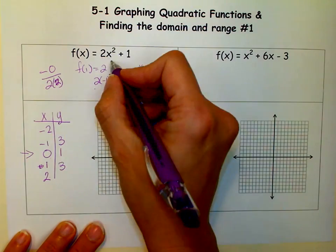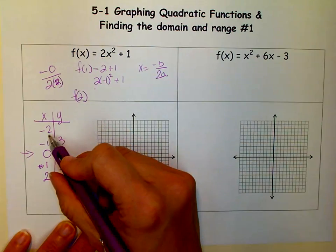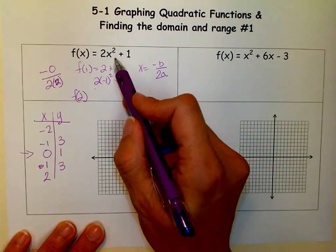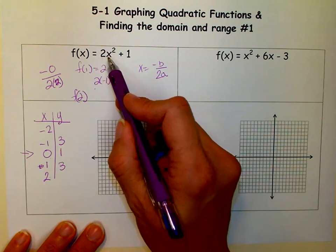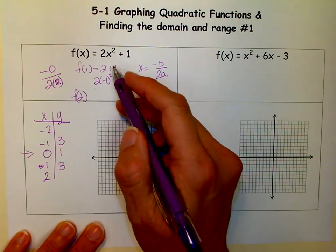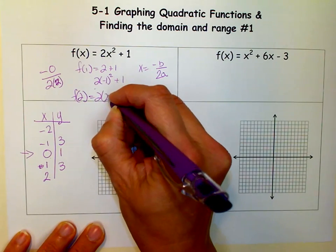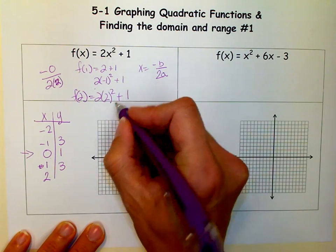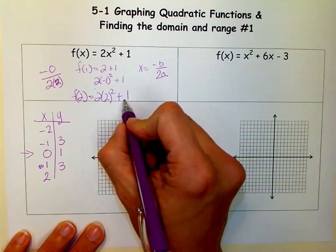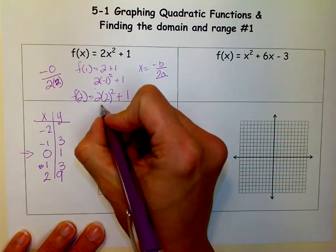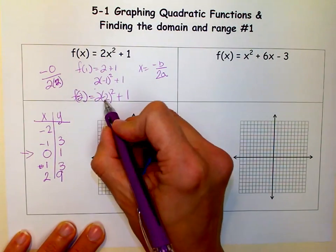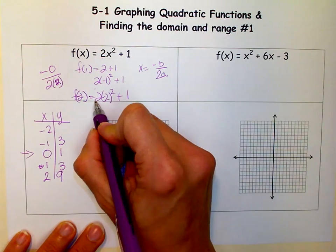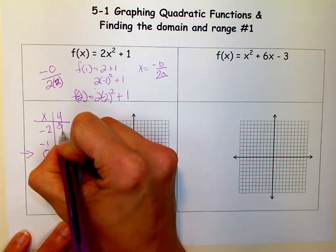So if I put a 2 in, f of 2, which is going to be the same as f of negative 2, because there's no x part here. So, 2-squared is 4, and 4 times 2 is 8, and 8 plus 1 is 9. And if I put a negative 2 in there, I get the same thing. Negative 2-squared is 4, times 2 is 8, plus 1 is 9.